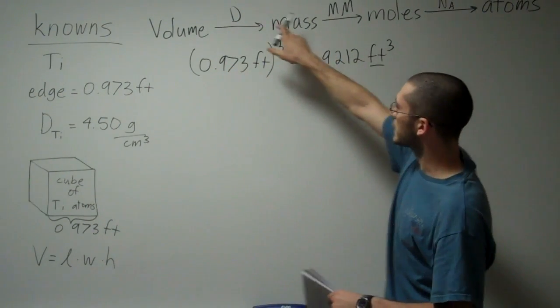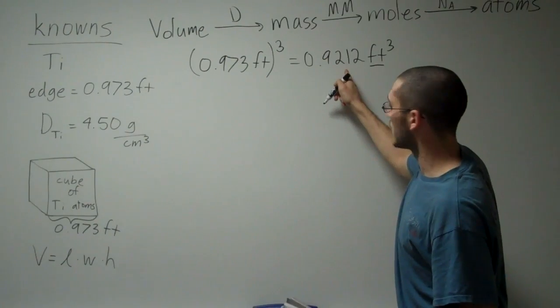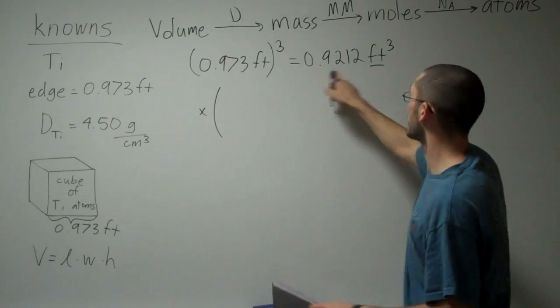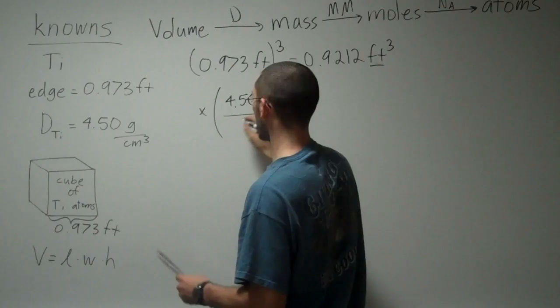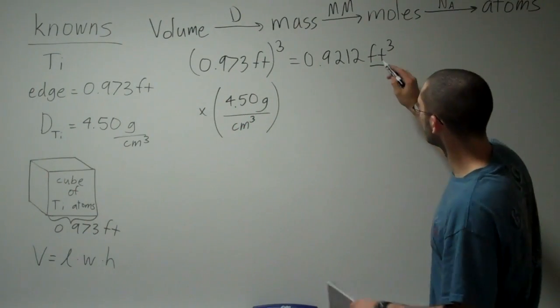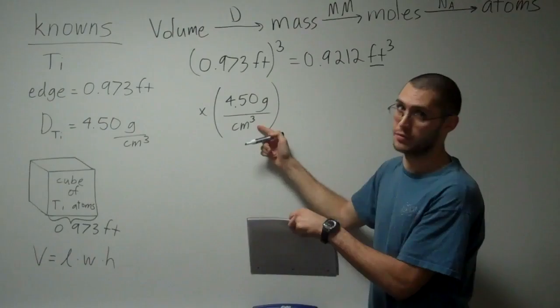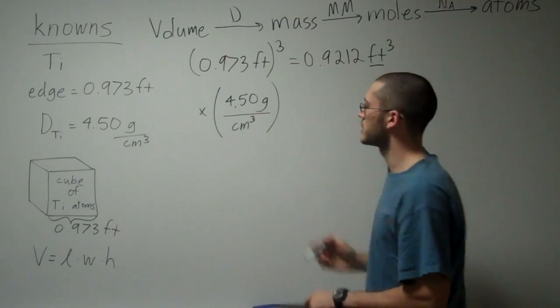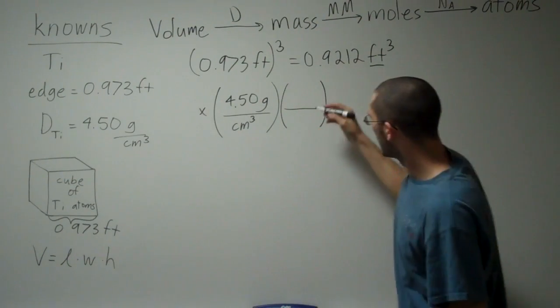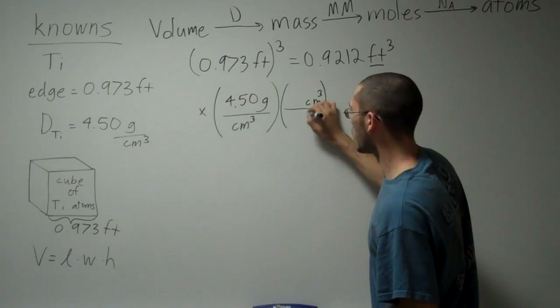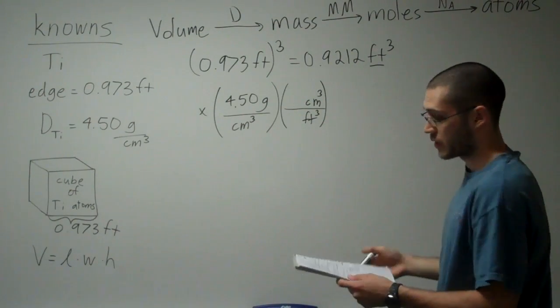So I have my volume. Step one is done. Now I need to go to mass. I can do that by way of density. I'm going to take my volume and I'm going to multiply by the density, 4.50 grams per centimeters cubed. But you notice that my feet cubed will not cancel my centimeters cubed down here. Feet cubed won't cancel centimeters cubed. So what do we do? I need to throw in another conversion factor that tells me how many centimeters cubed there are in one foot cubed.